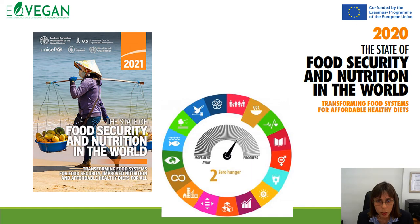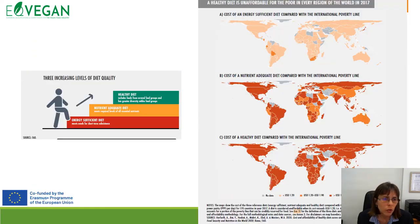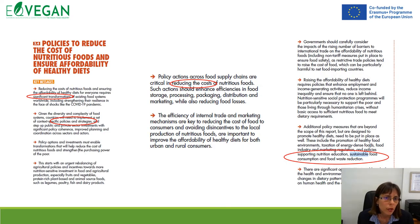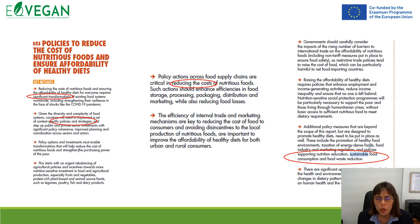By addressing nutrition, we can tackle almost all SDGs. There are different documents and legislation regarding food security and nutrition, and the aim is to tackle the second sustainable development goal: zero hunger. We need to assure healthy, nutrient-adequate, and energy-sufficient diets for consumers, and provide affordable food for everyone in the world. This requires improving policies to reduce the cost of nutritious foods and assuring the affordability of healthy diets.